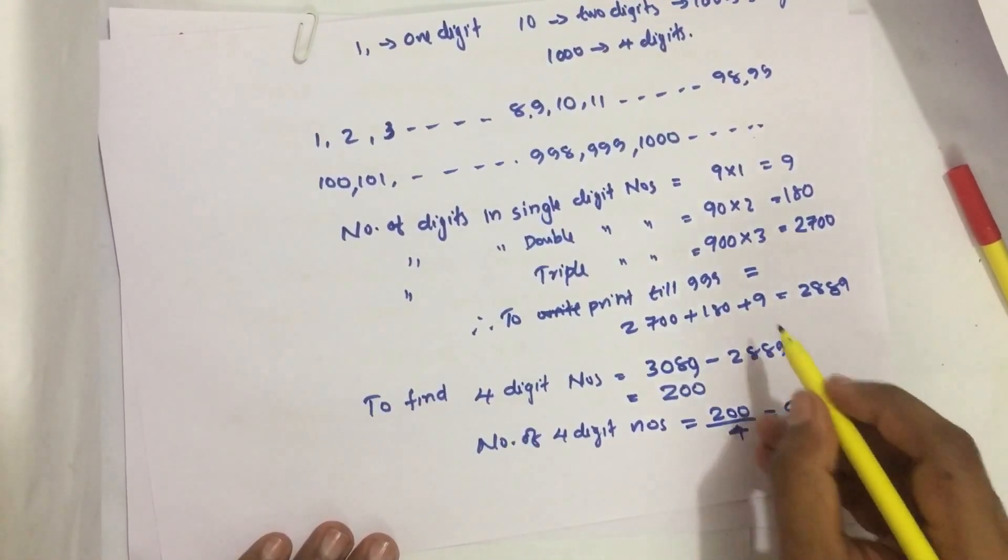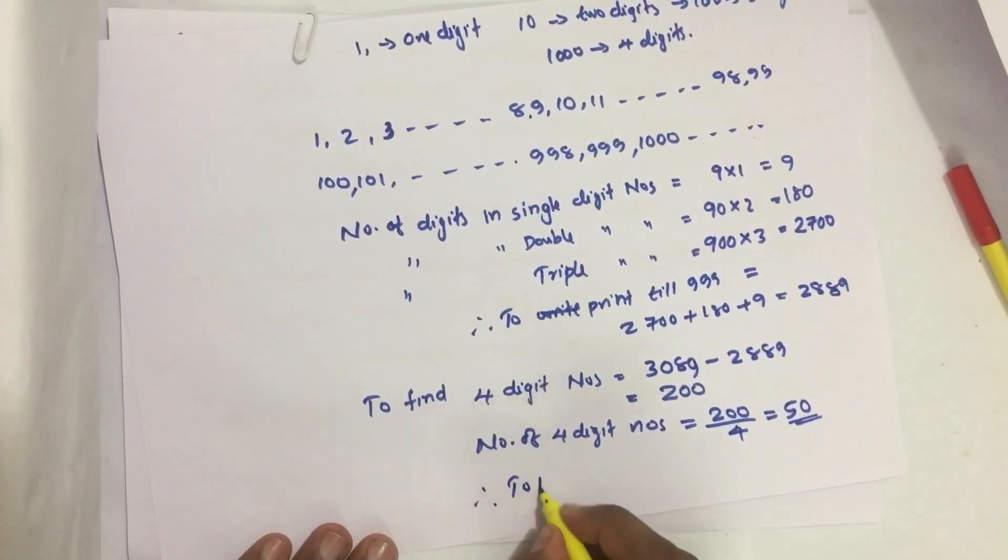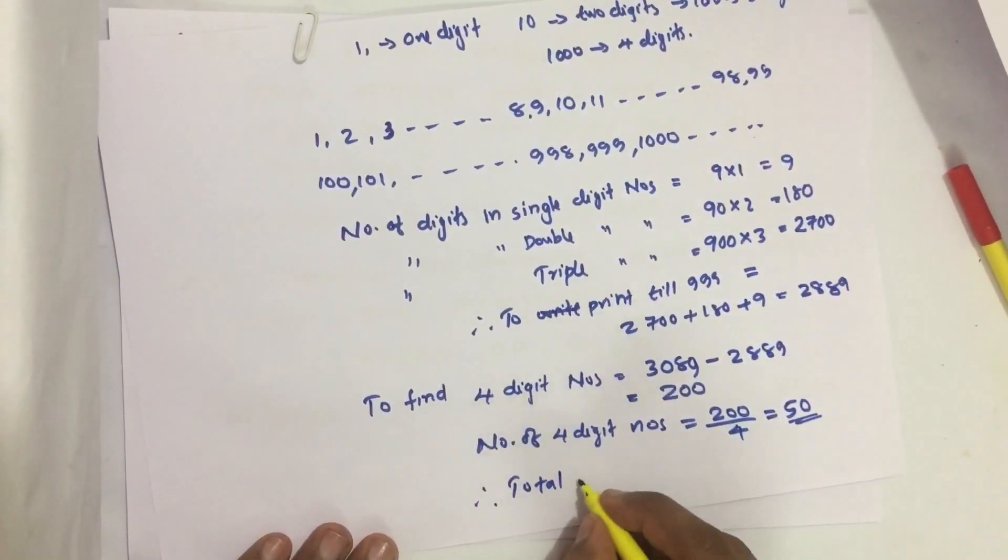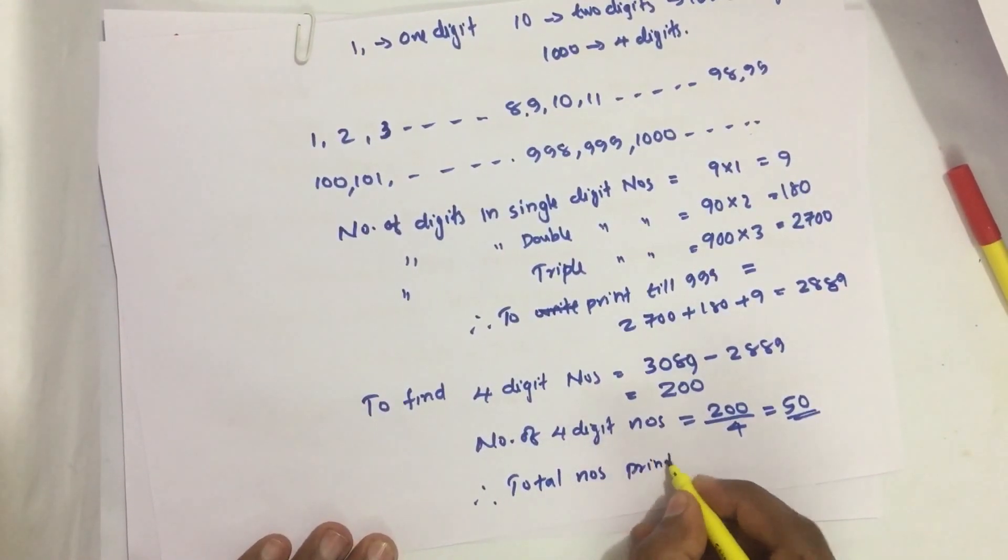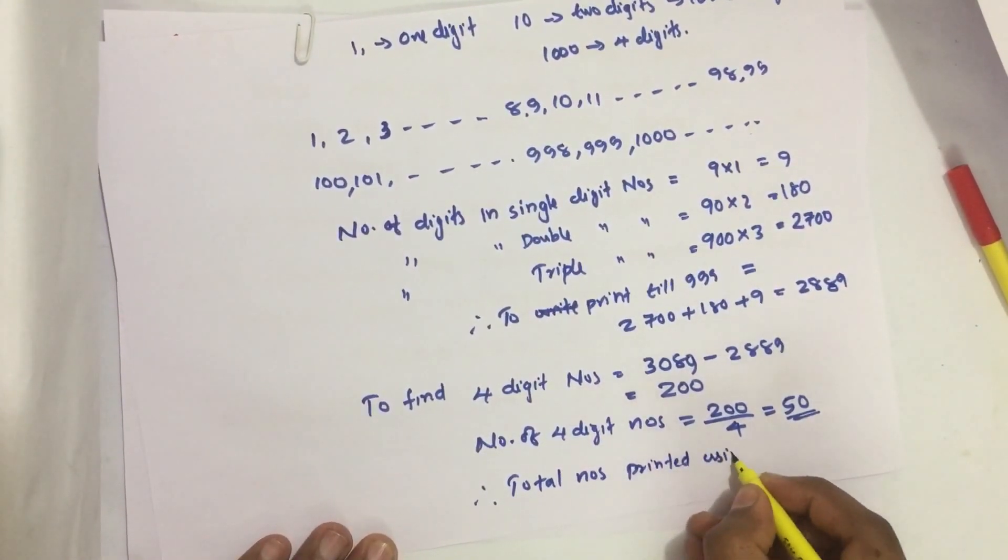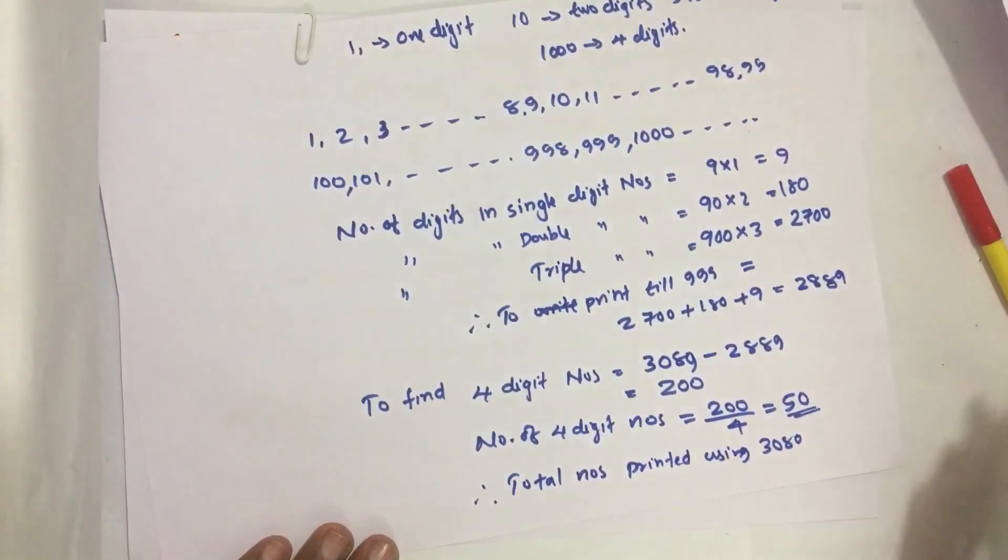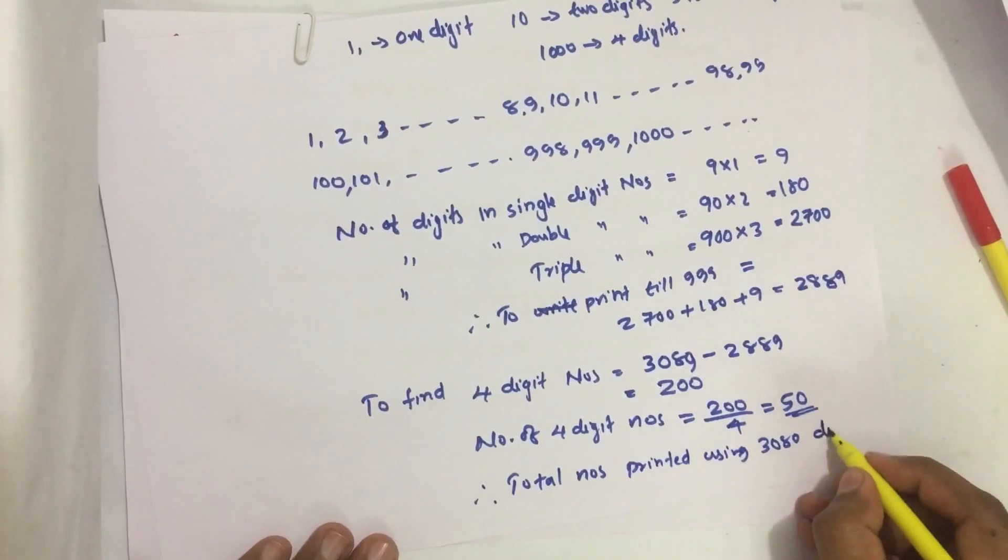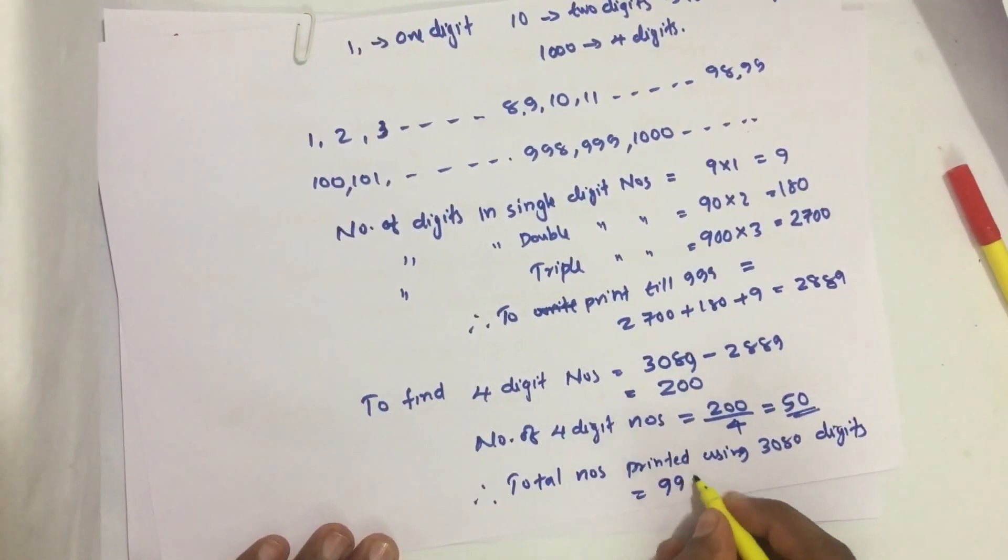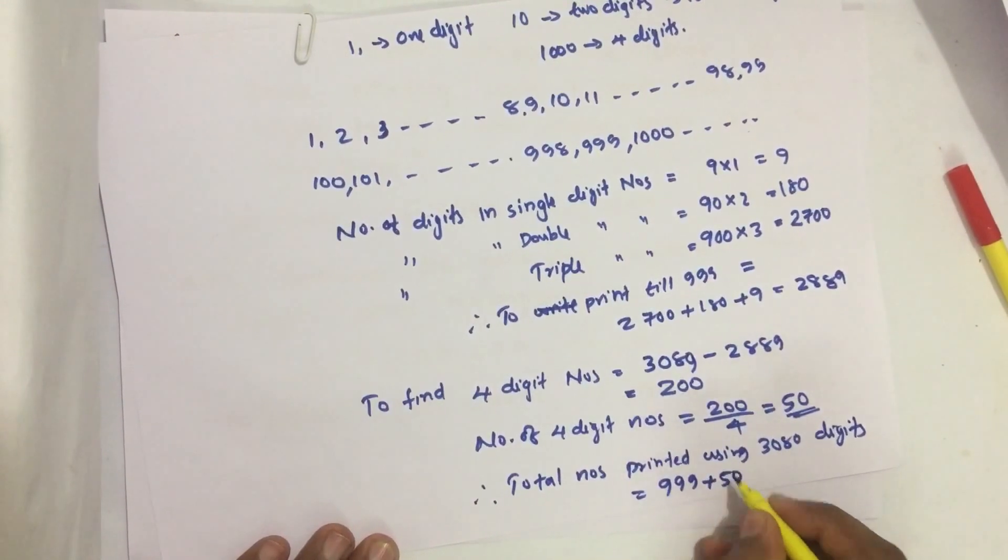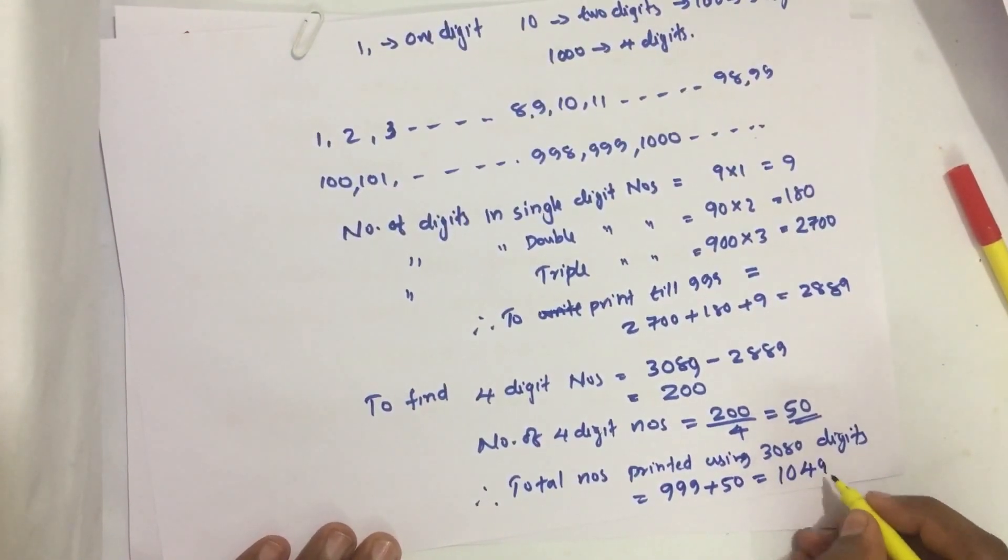We add this 50 to 999, and therefore the total number of pages is 999 plus 50, which equals 1049.